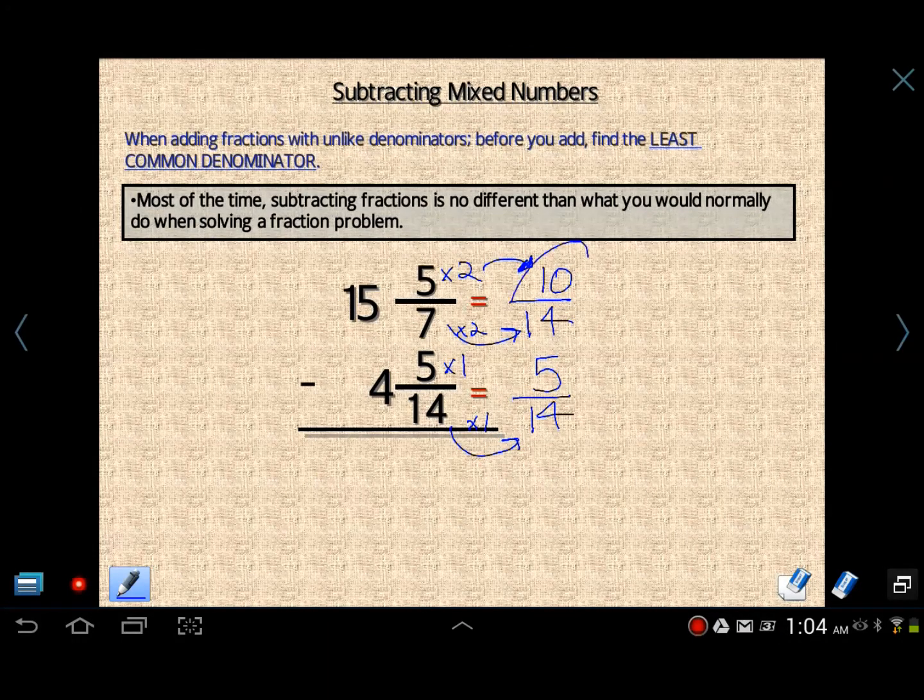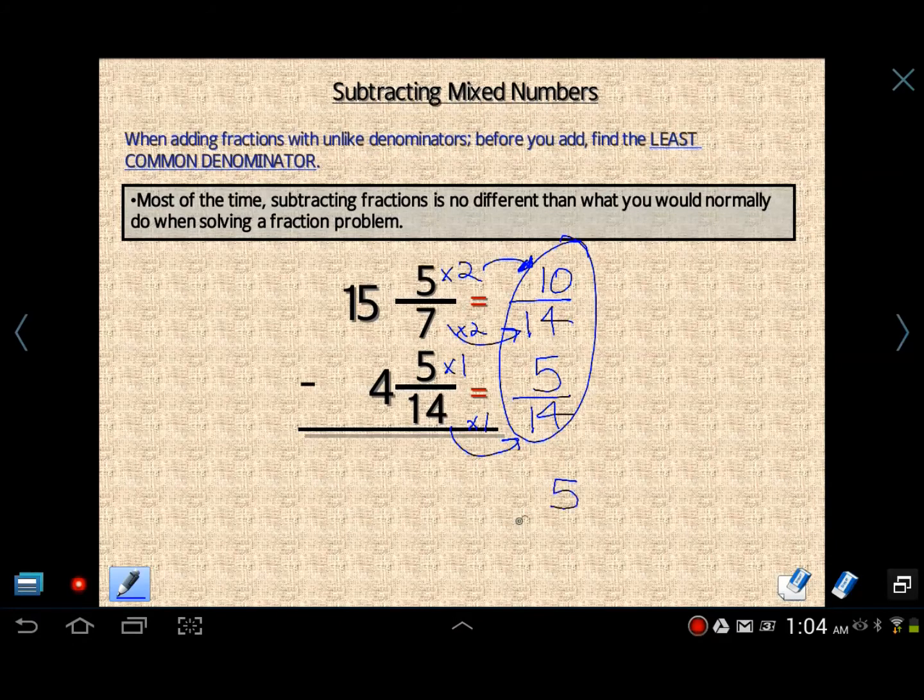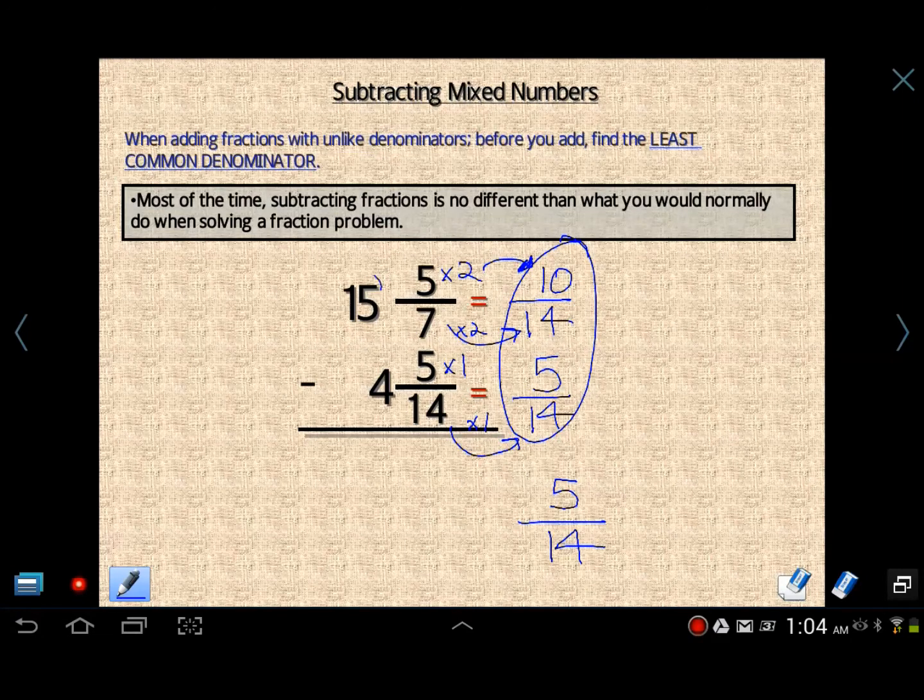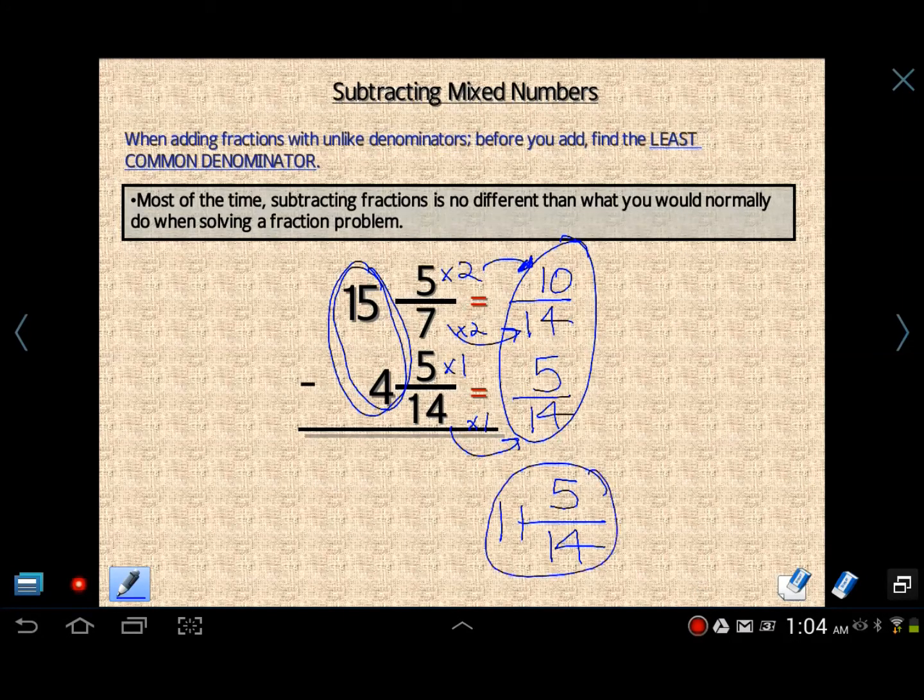So now what we're going to do is we're going to subtract the fractions. 10 minus 5 is 5. Don't subtract denominators ever. You get 5 14ths. And it looks like we're done, but don't forget about the whole numbers. 15 minus 4 is 11. So there's your answer, 11 and 5 14ths.